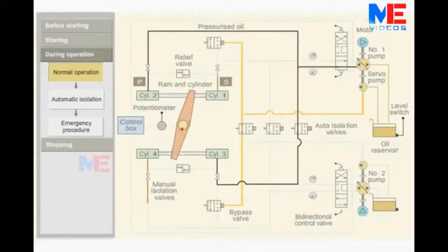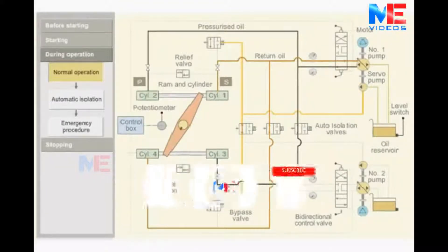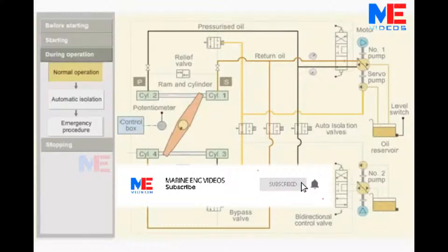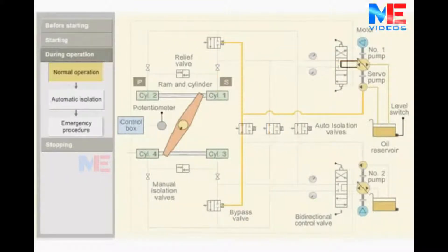The return oil from ram 1 and 4 flows back to the pump return side. When the rudder stock reaches the desired helm angle, the potentiometer sends a signal to the control box. The control box sends a signal to bidirectional control valve. The valve is pushed back to its initial position. This blocks the oil flow and stops the movement of the ram.